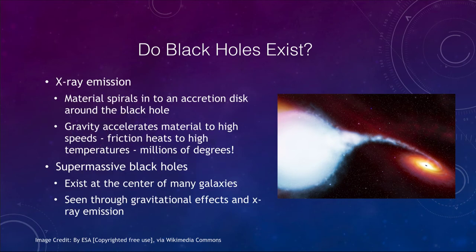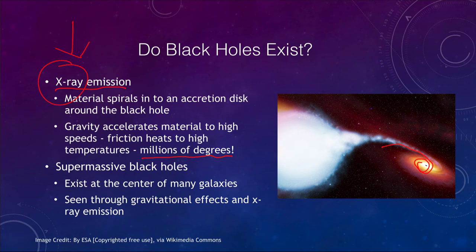There are other examples as well. We can also look at X-ray emissions — as material spirals into the accretion disk and into the black hole, it gets heated up to millions of degrees, and at those temperatures it will emit X-rays. That is one way to measure the black hole. We can also have supermassive black holes, which exist at the center of most if not all galaxies, and are also seen through gravitational effects and X-ray emission.